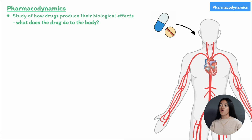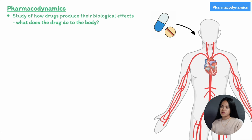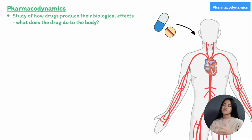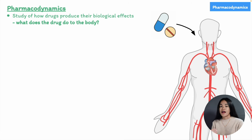Why is pharmacodynamics important? Because understanding pharmacodynamics is important for the development of safe and effective drugs. By studying how drugs interact with the body, we can predict their effects, optimize their dosing regimes, and minimize their potential for adverse reactions. So how does a drug exert its effects on the body?